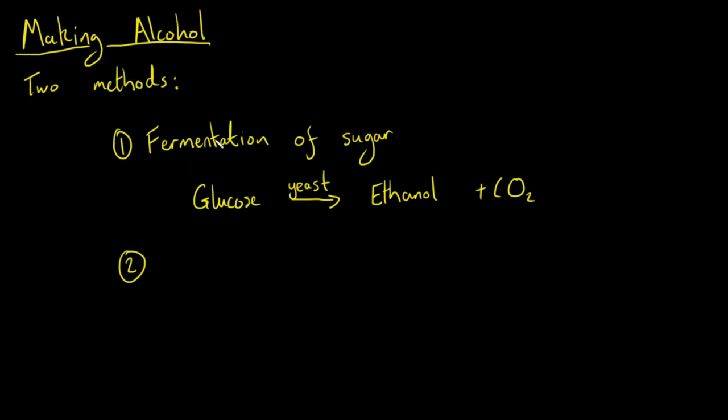And the second method to make alcohol would be an addition reaction and specifically an addition reaction using water. So addition reaction with H2O or water and that is called a hydration reaction. Now you might remember us talking about hydration reactions when we looked at addition reactions in a previous video. So hydration reaction in chemistry is when we're adding water, an H2O molecule to a carbon to carbon double bond. So that's the second way that you can make alcohol.